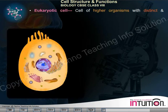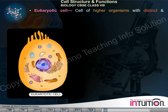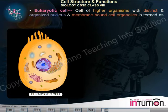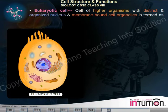Eukaryotic cell. A cell of higher organisms with a distinct and organized nucleus and membrane-bound cell organelles is termed as a eukaryotic cell.